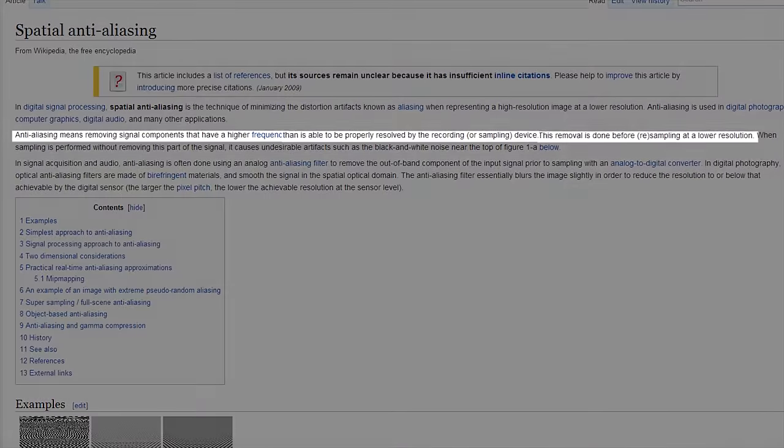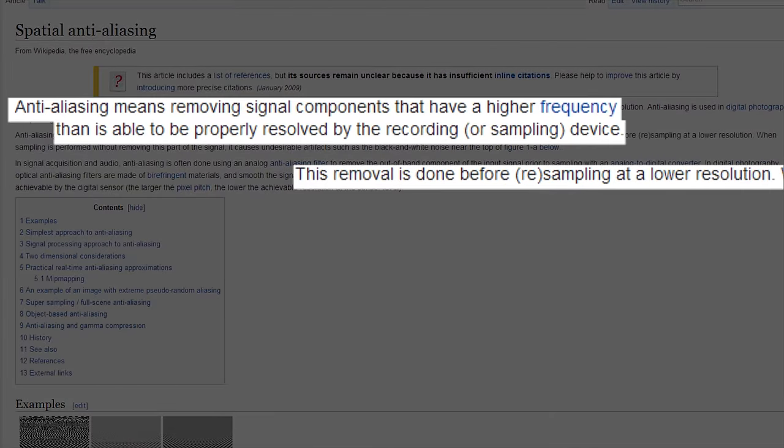Moving along, all methods of anti-aliasing fall into one of two groups. The first increases the sample rate, which means it renders the scene at what is effectively a higher resolution then downsamples to the display resolution, effectively smoothing lines.